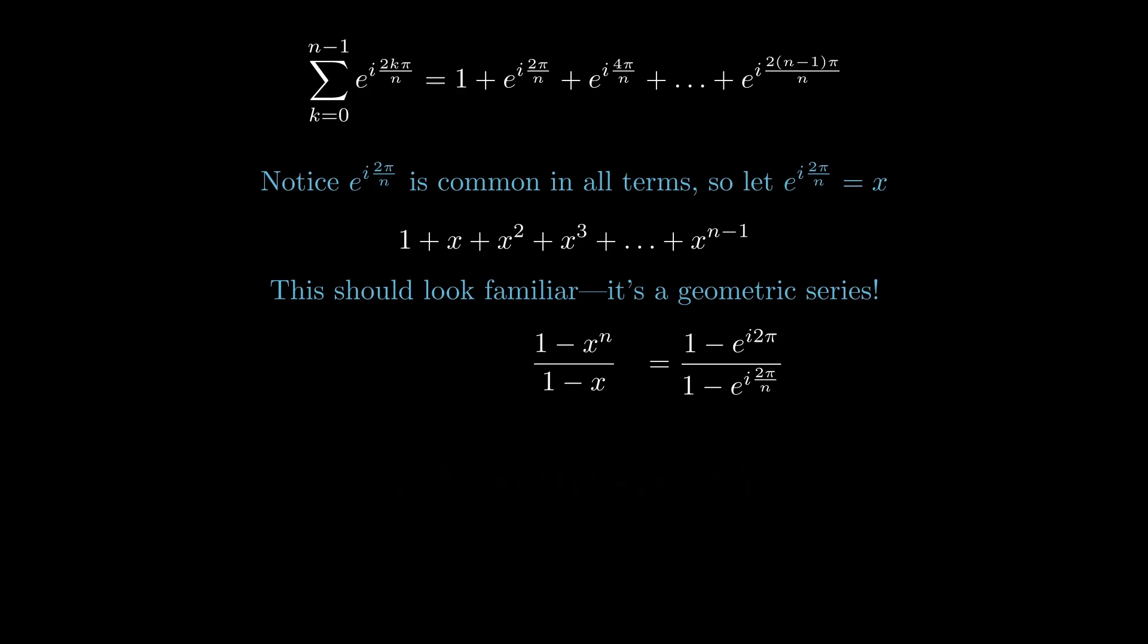So, the sum becomes (1 - 1)/(1 - e to the i(2π/n)). Therefore, the total sum is 0.